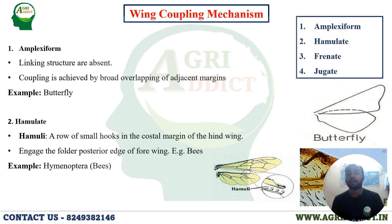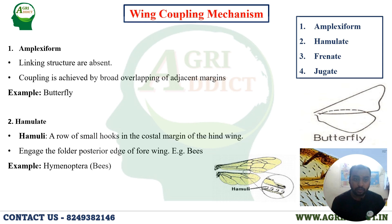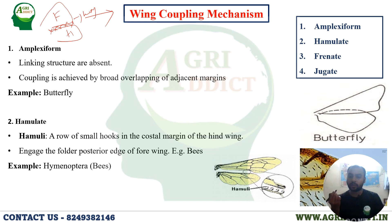What is the wing coupling mechanism? Coupling means the joining of two structures. There are two types of wings — the forewing and the hindwing. When the forewing is attached to the hindwing by some linking structure, that is called the wing coupling mechanism. As shown in the diagram, if the forewing and hindwing are connected to each other by linking structures, that is called the wing coupling mechanism.